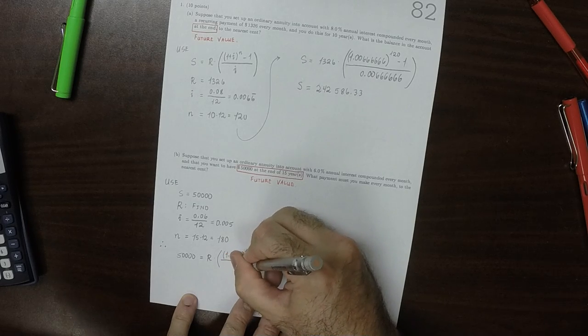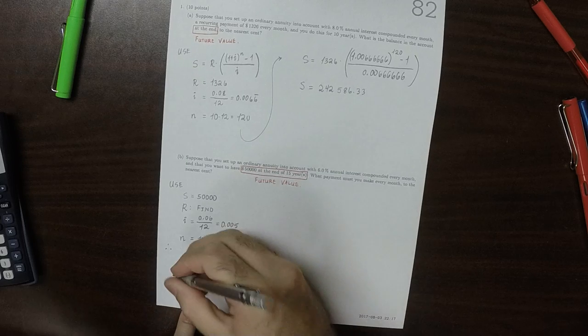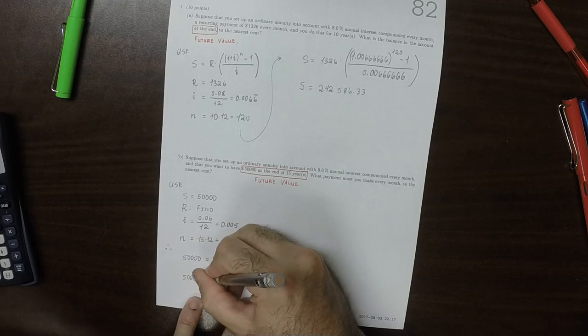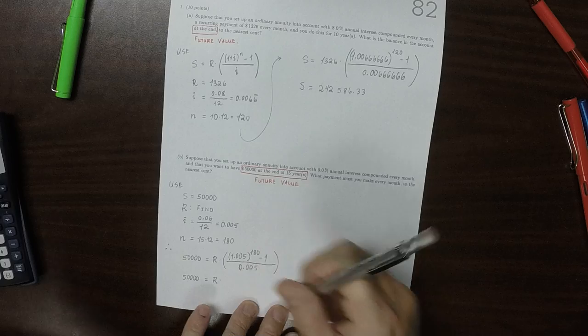So 50,000 is the unknown R multiplied by 0.005.